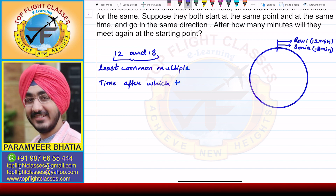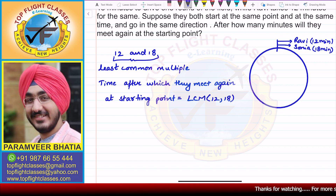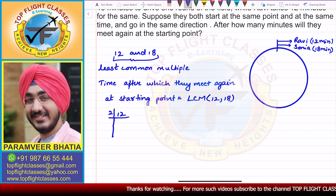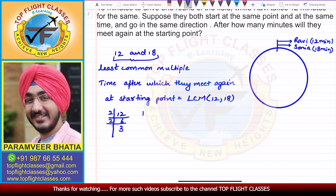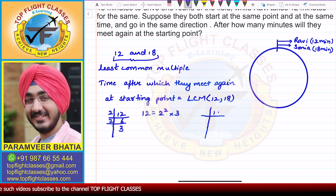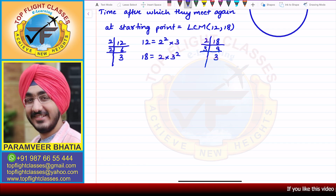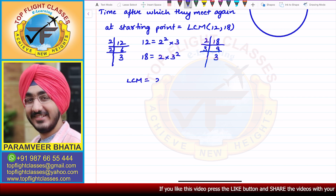The time after which they meet again at the starting point is given by LCM of 12 and 18. For prime factorization of 12: 12 = 2 × 6 = 2 × 2 × 3, so 12 = 2² × 3. For 18: 18 = 2 × 9 = 2 × 3 × 3, so 18 = 2 × 3². The LCM is the product of the greatest powers of all prime factors: greatest power of 2 is 2², greatest power of 3 is 3², so LCM = 4 × 9 = 36.